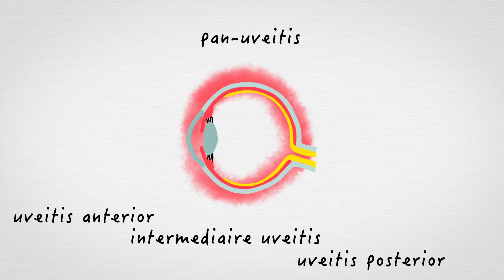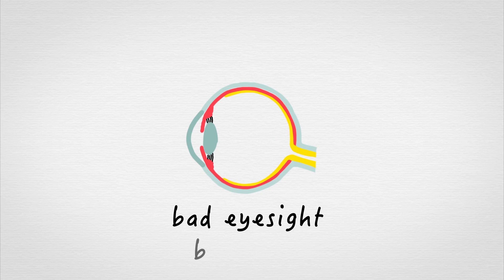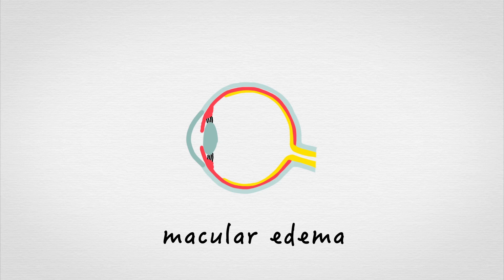Leaving uveitis untreated can lead to serious consequences, such as bad eyesight, and in some cases even blindness. Another serious consequence is macular edema, where the back of the eye swells with fluid. This can blur the center of your visual field — the part that's essential for straight-ahead vision.